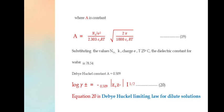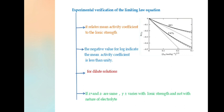log(γ±) = -0.509·Z+Z-·√I. This equation 20 is called Debye-Hückel limiting law for dilute solution.